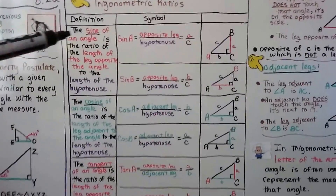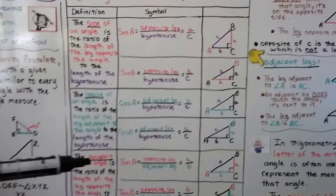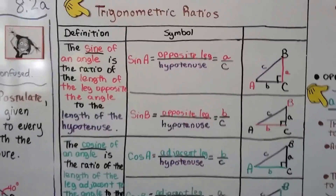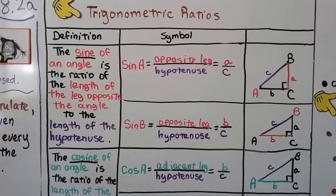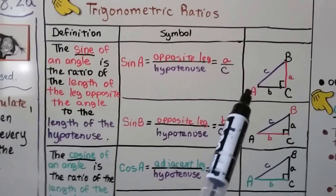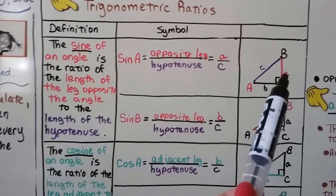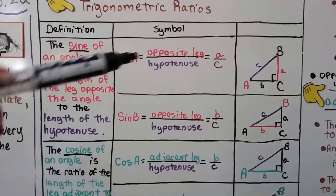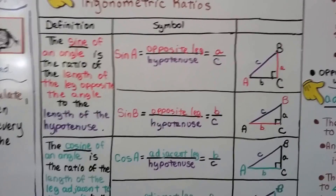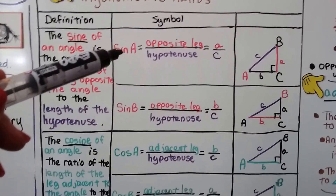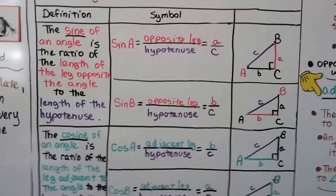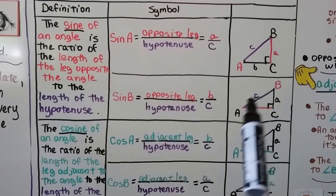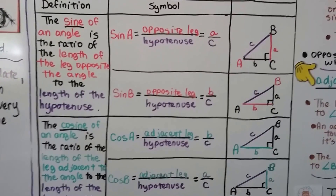Here is a table of some of the trigonometric ratios. We have sine, cosine, and tangent. The sine of an angle is the ratio of the length of the leg opposite the angle to the length of the hypotenuse — opposite leg over hypotenuse. So the sine of A is the opposite leg over the hypotenuse. And the sine of B would be the opposite leg over the hypotenuse.